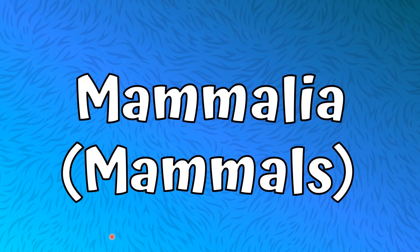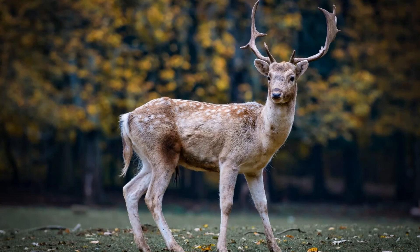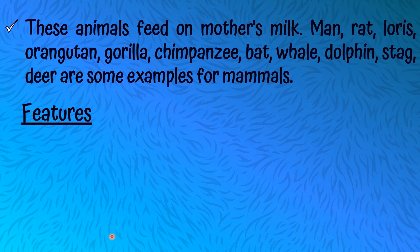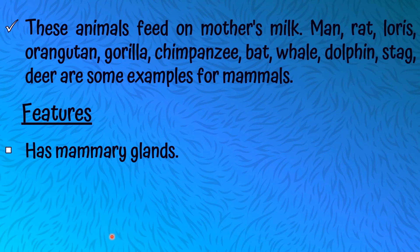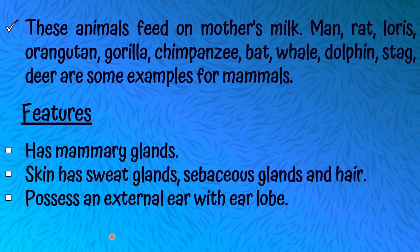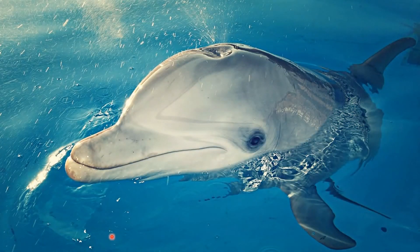Let's talk about our final type of vertebrates: Mammalia, or Mammals. These animals feed on mother's milk. Examples include rat, loris, orangutan, gorilla, chimpanzee, bat, whale, dolphin, and stag. Features of Mammals: they have mammary glands, which are helpful for feeding babies with mother's milk. The skin has sweat glands, sebaceous glands, and hair. They possess an external ear with an earlobe. Mammals have lungs to breathe. A dolphin is a mammal.